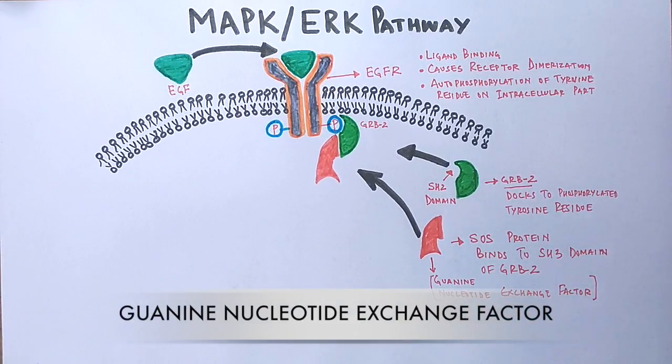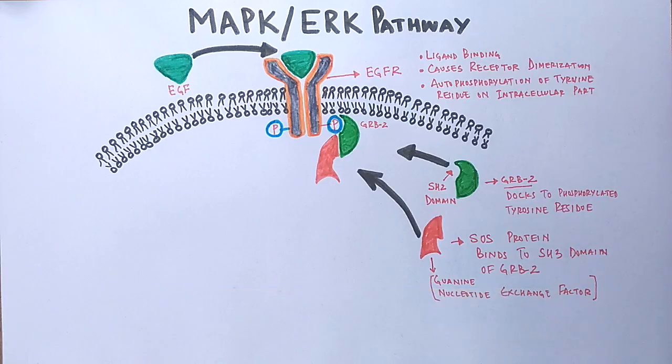This molecule has the capability to replace GDP for GTP. It replaces GDP from an inactive molecule and makes them active when it binds the GTP molecule to the target molecule. Simply we can say GDP is replaced and GTP is attached by this SOS protein.